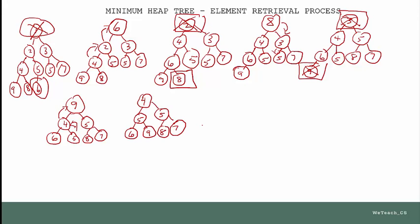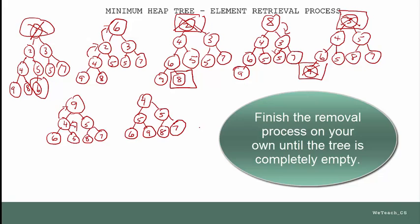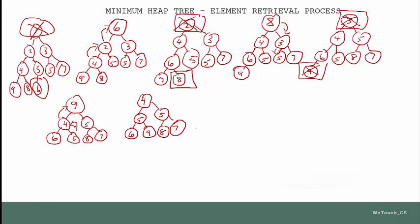We could continue this process until the tree is totally empty, and I strongly suggest that you do that on your own and see if you can make it happen. Now you know how elements are retrieved from a minimum heap tree and then the tree is returned to its restored minimum state.